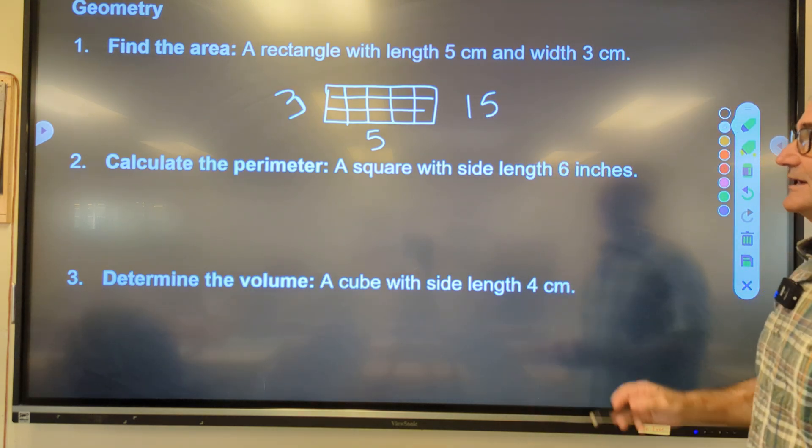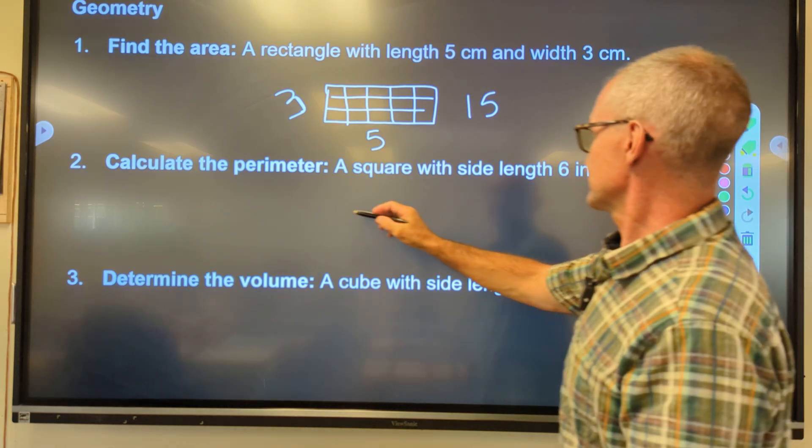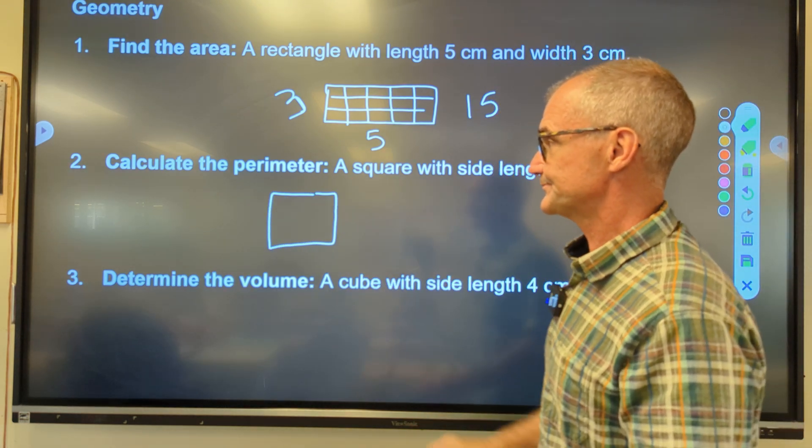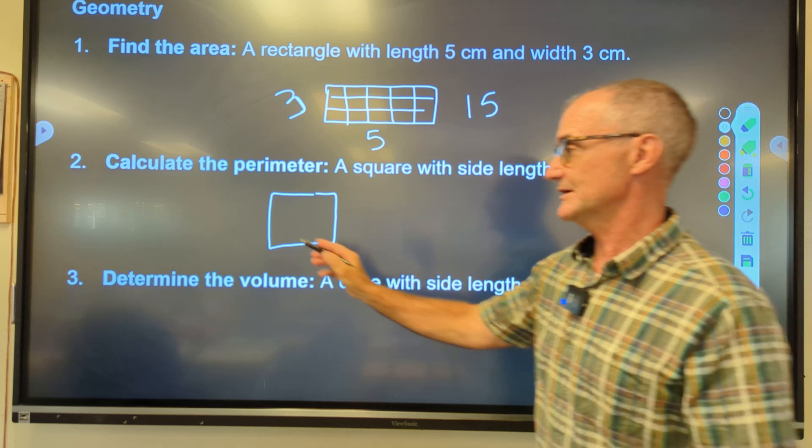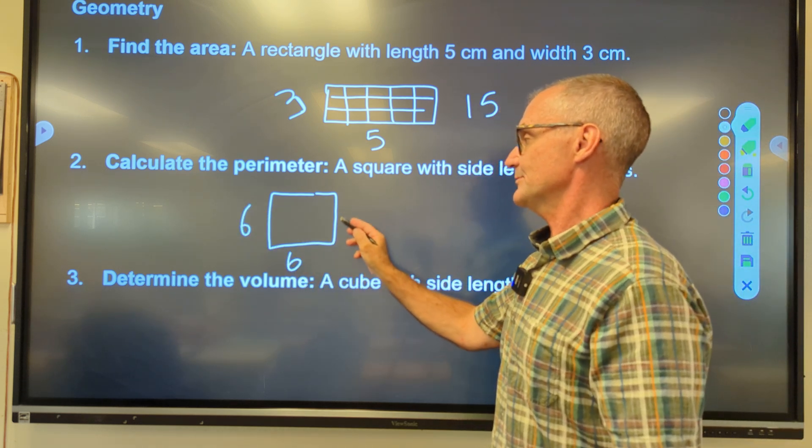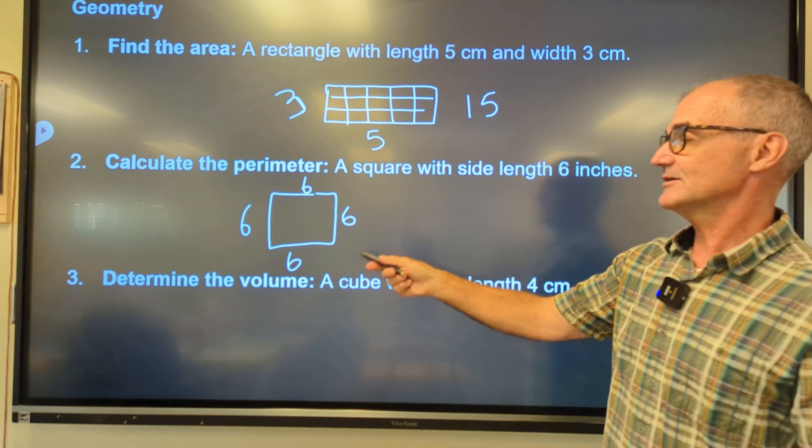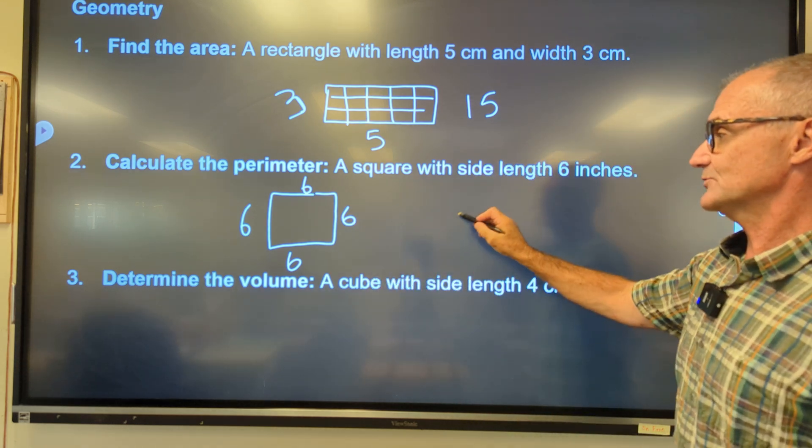Calculate the perimeter of a square with length of side 6. So a lot of this is vocab. Definition of a square is all sides are equal. Perimeter is the length around the outside. So I'm going to add all those 6's up to get 24.